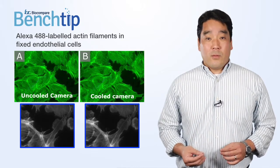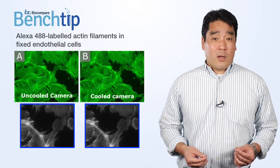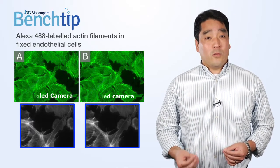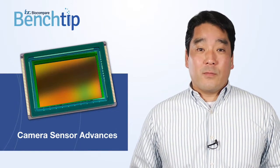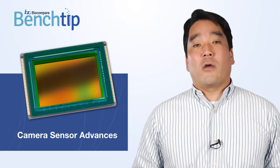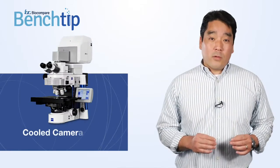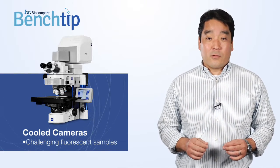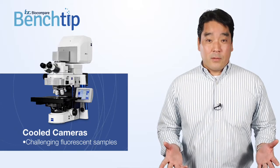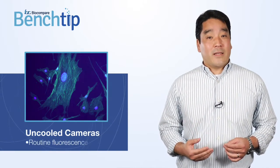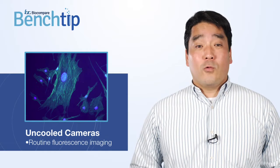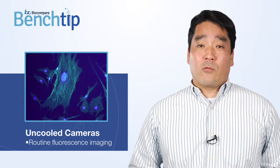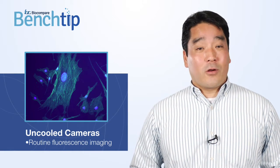The main difference between the two images is that the one on the left is taken with an uncooled camera and the one on the right is from a cooled camera. Historically, cooling was necessary for fluorescence imaging. However, advances in camera sensor technology over the last 25 years mean that cooling is no longer required for routine fluorescence imaging. Cooled cameras are ideal for challenging fluorescence samples that require more sophisticated microscopes such as confocal microscopes. For most fluorescence imaging situations, cooling is not required. Uncooled cameras can provide excellent, low-noise images for general fluorescence applications at a lower cost than a cooled camera.